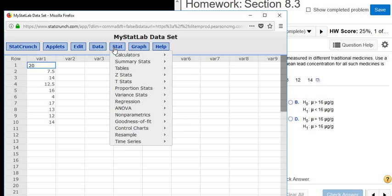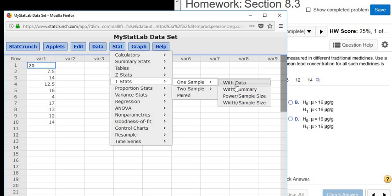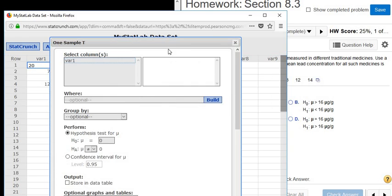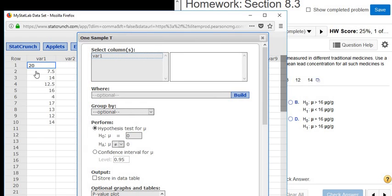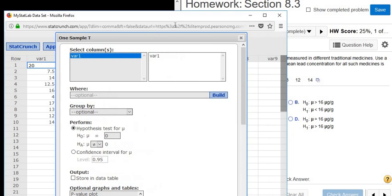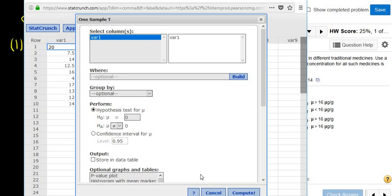Then we go to Stat, T, one sample, and then we're going to use with data because we have the data. Now it says select columns. So the data is in the first column called var1. So we're just going to left click on var1, and then we have to click compute down here.